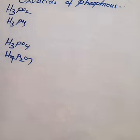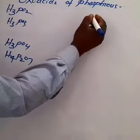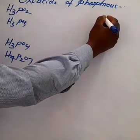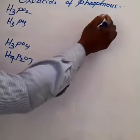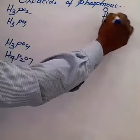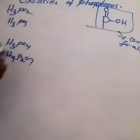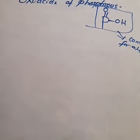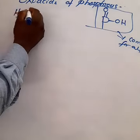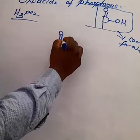Before drawing the structures, note there is a common arrangement for all these phosphorus oxoacids. Every structure contains a phosphorus with a P=O double bond upward and an OH group on the side. This P=O and OH group is common to all structures.